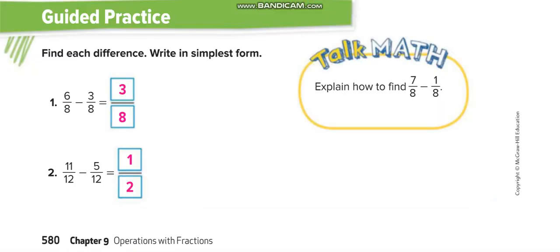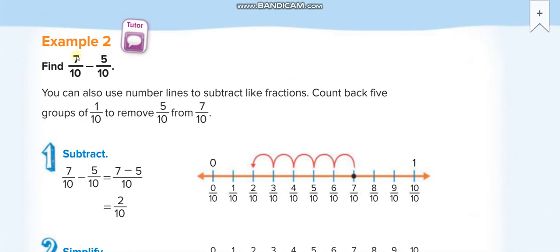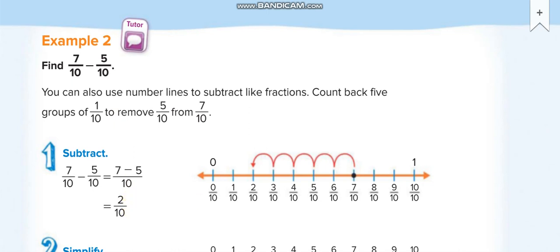Similarly here in example 2, 7 over 10 minus 5 over 10 is equal to 2 over 10, and then we will simplify it. We can simplify dividing by 2 up and 2 down, so it will be 1 over 5.